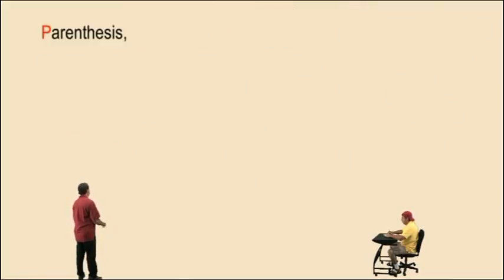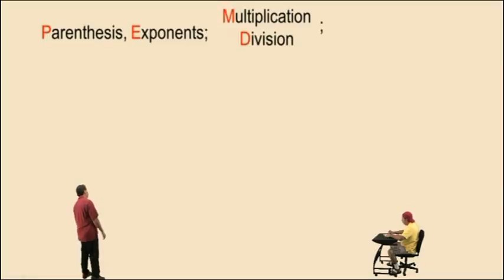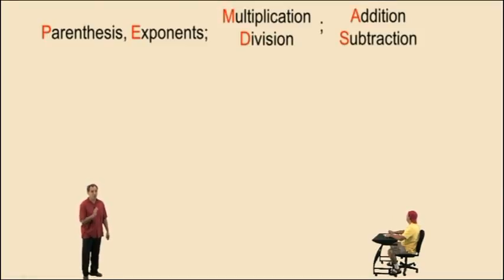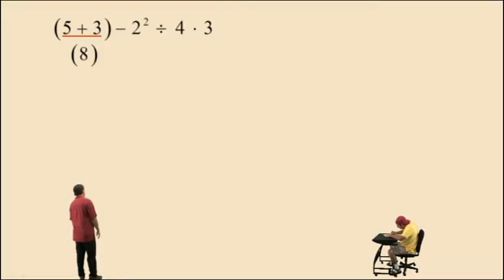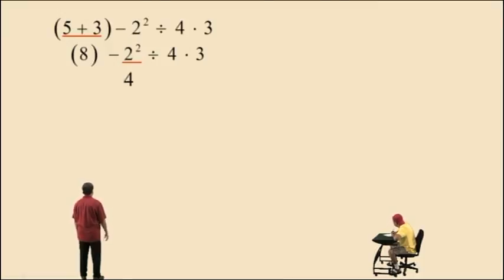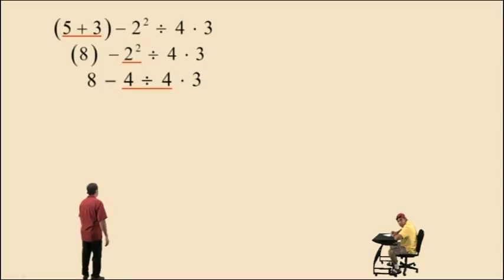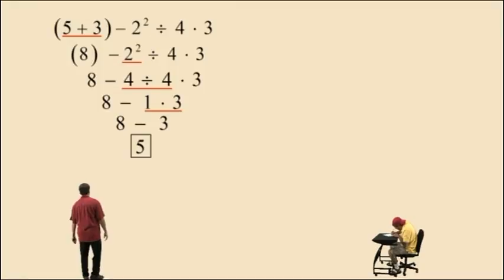Okay, so our order of operations — our four categories: parentheses and other grouping symbols, exponents, multiplication and division working left to right whichever comes first, and addition and subtraction working left to right whichever comes first. That's your order of operations. So here's a problem. Notice we have parentheses, so we'll do that first. 5 plus 3 is 8. Bring down our work. We don't require those parentheses around that positive 8. We have exponents: 2 squared — 2 times 2 is 4. Bring down our work. Now we have a division and multiplication, but division comes first working left to right. Therefore we perform division. 4 divided by 4 is 1. Bring down our work. Here we have a subtraction and a multiplication. Multiplication must be done before subtraction. So we have 1 times 3, which is 3. Bring down your work. And now 8 subtract 3 is 5. That is our final answer.